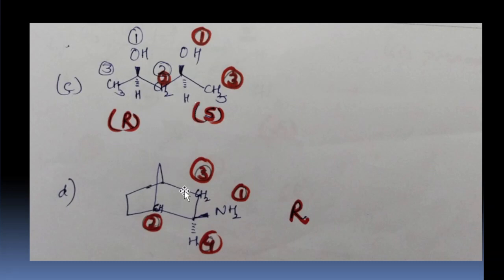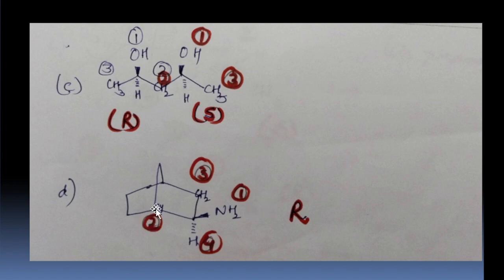Next example D. Here this is the chiral center. This position is called the exo position and this is called the endo position. In the endo position no substituent is given in the example, so we consider it as H. The substituents are nitrogen, CH2, and CH. Nitrogen gets number 1. CH having 1 substituent gets number 2, CH2 gets number 3, and H gets number 4. Going 1, 2, 3, 4 clockwise, the answer is R.